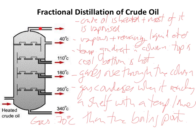At the top, there's another pipe. Some fractions with a boiling point lower than 40 degrees Celsius won't condense in the column and will come out as gases. So we get some really thick, gloopy liquids coming out of the bottom of the column, and some very light, flammable gases at the top. We're now going to look at the names of the different fractions, how they're used, and trends in properties of the fractions that come out of the column.